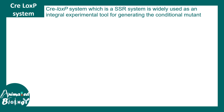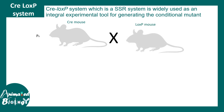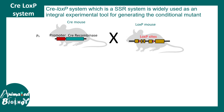The Cre-LoxP system uses site-specific recombination, and the Cre enzyme is actually a recombinase — it's a tyrosine-based recombinase. In this system, you have a Cre mouse which is crossed with a LoxP mouse, and in the F1 generation you have the knockout. In the Cre mouse, you have the Cre recombinase coding sequence underneath a tissue-specific promoter. LoxP sites are necessary for this site-directed recombination reaction.